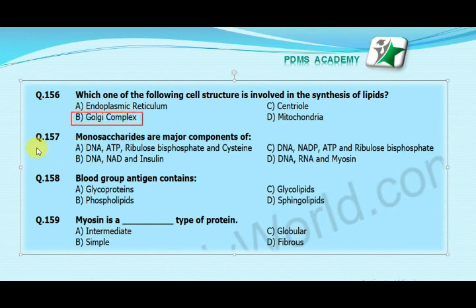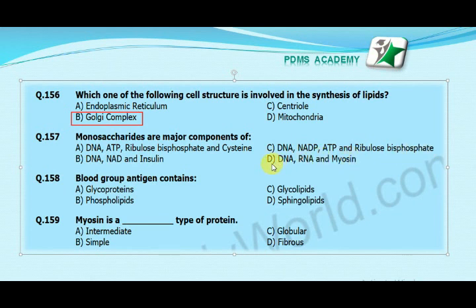Monosaccharides are major components of: option A DNA, ATP, ribulose bisphosphate and insulin, option B DNA, NAD and insulin, option C DNA, NADP, ATP and ribulose bisphosphate, option D DNA, RNA and myosin. The correct answer is C, DNA, NAD, ATP and ribulose bisphosphate.